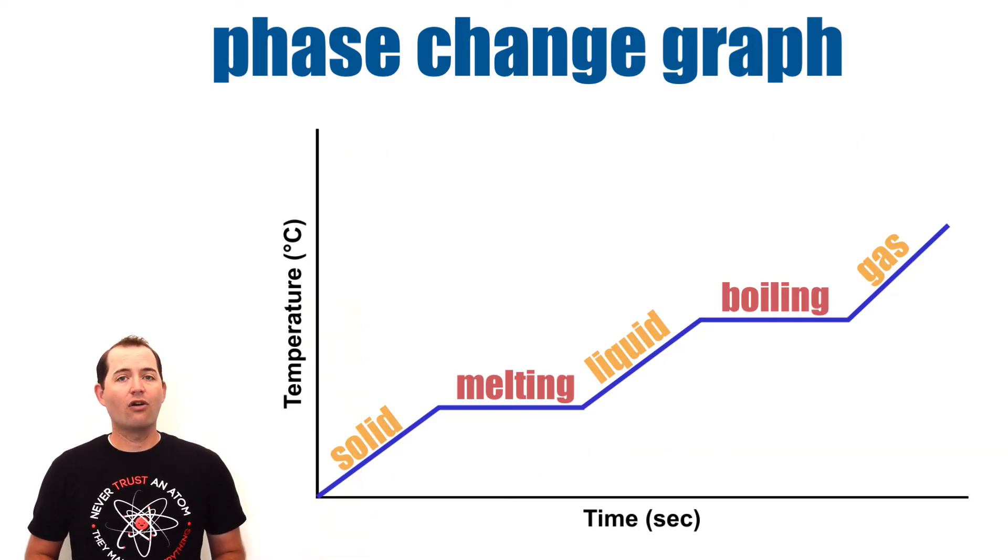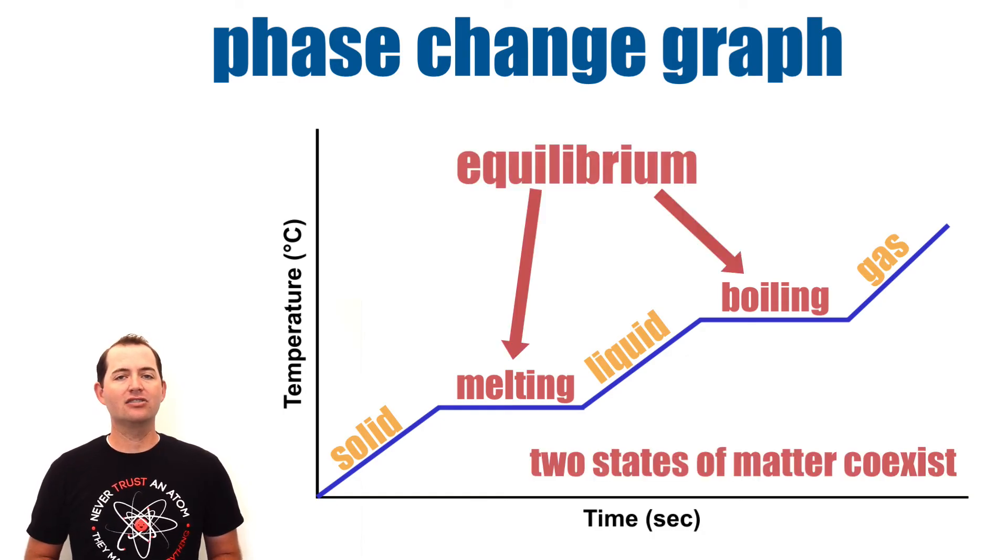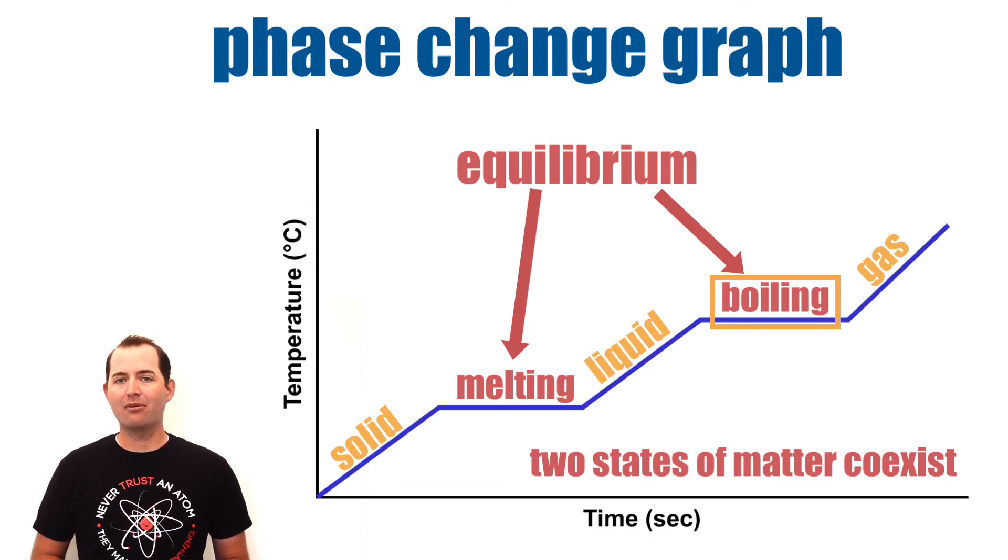The horizontal or phase change portions of the graph also represent equilibrium, where two states of matter coexist. For example, at the evaporation portion of the graph, both liquid and gas coexist simultaneously.